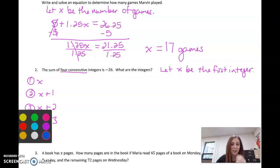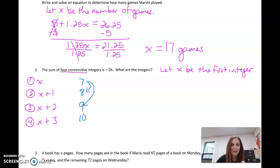Now I'm going to write this down. If I had four consecutive integers, let's say 7, 8, 9, and 10, what do I do to 7 to get 8? I add 1. What do I do to 7 to get 9? I add 2. What do I do to 7 to get 10? I add 3. So this is why we write it like this.